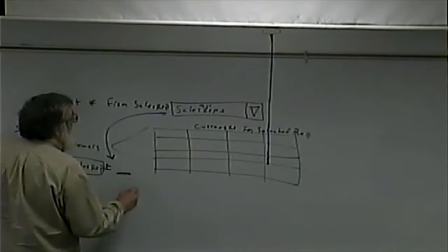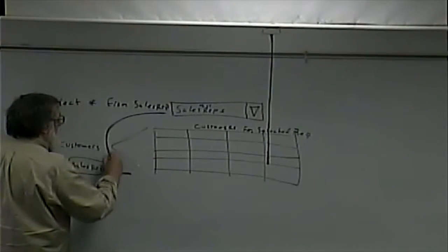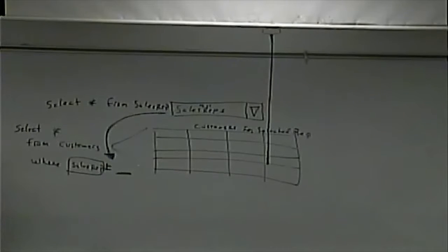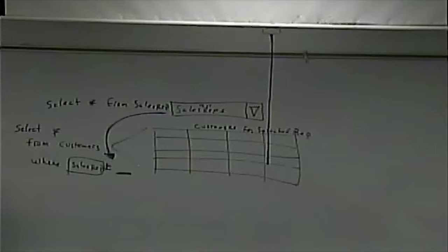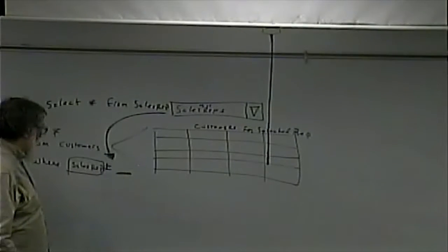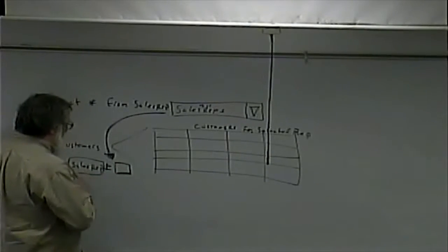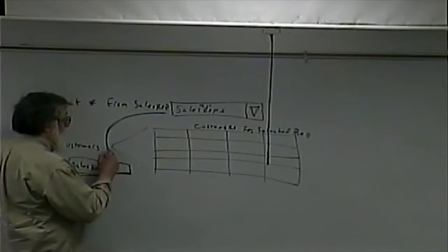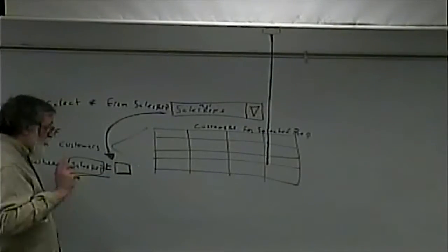We have a drop-down, we have a grid view, and we're going to have two data sources. One is going to be a list of all sales reps; one is going to be a list of customers for the selected sales rep. What ties them together is the parameter, where we specify that we don't want to see every customer — only the customers of this sales rep — and the specific value gets filled in from the value of the drop-down. So let's go and make this.